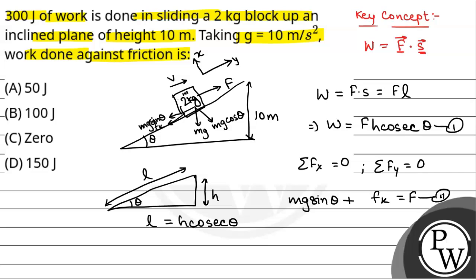From these equations, work done equals F into h cos theta. Substituting F equals mg sin theta plus fk, we get: work done equals (mg sin theta plus fk) into h cos theta. This simplifies to mg·h·sin theta·cos theta plus fk·h·cos theta. This is the expression for total work done.